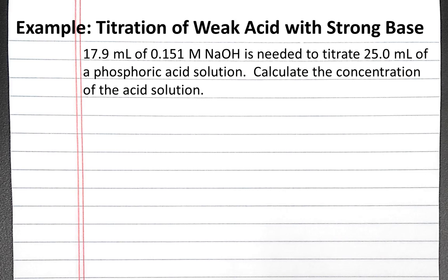In this example, we'll look at the titration of a weak acid with a strong base. Our strong base is sodium hydroxide, and we use 17.9 milliliters of 0.151 molar sodium hydroxide to titrate 25 milliliters of a phosphoric acid solution. We want to calculate the concentration of this phosphoric acid solution.